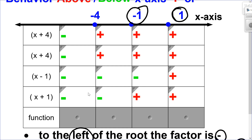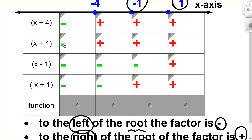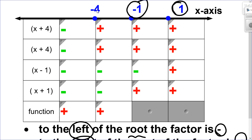Multiplying the signs together: to the left of negative 4, four negatives make it positive — the function is above the x-axis. In between negative 4 and negative 1, two negatives make it positive — above the x-axis. That makes sense because at negative 4 I had a touch and turn around. Between negative 1 and positive 1, one negative means the function is below the x-axis. To the right of 1, all factors are positive — the function is above the x-axis.